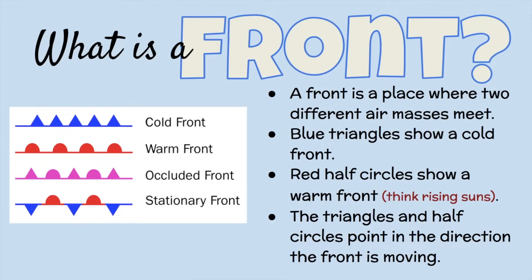What is a front? A front is a place where two different air masses meet. Blue triangles show a cold front. Red half circles show a warm front — think of rising suns, that's how I remember the warm front. The triangles and half circles point in the direction the front is moving.